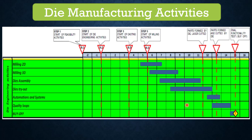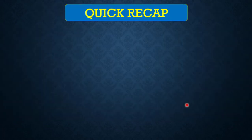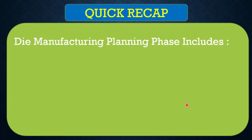Then the core activity of die machining starts: 2D milling, 3D milling, die assembly, die trials, automations and systems, quality loops, and finally the buyoff.